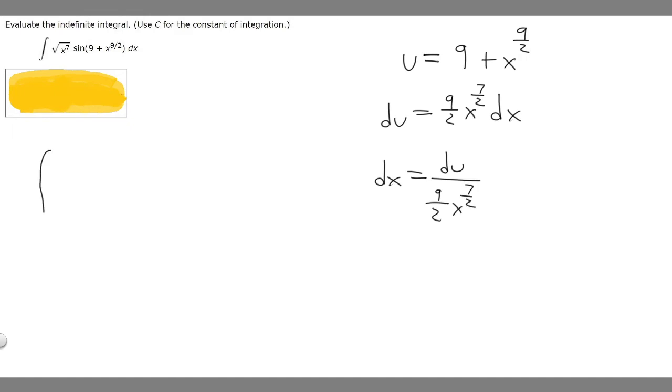So now let's just rewrite our integral. We have the square root of x to the 7th. I'm going to choose to write it as x to the 7 over 2, because they're basically the same thing. So x to the 7 over 2 times the sine of, and then we replace 9 plus x to the 9 over 2 with u. So whatever our u is, we actually replace with u. Then we replace dx with what we solved dx to be, so du over 9 over 2 times x to the 7 over 2.